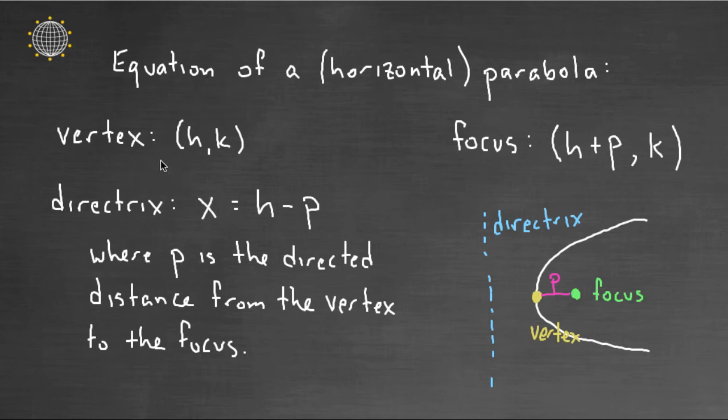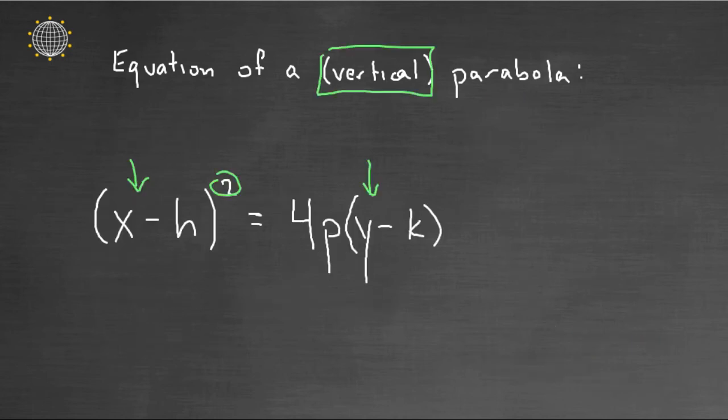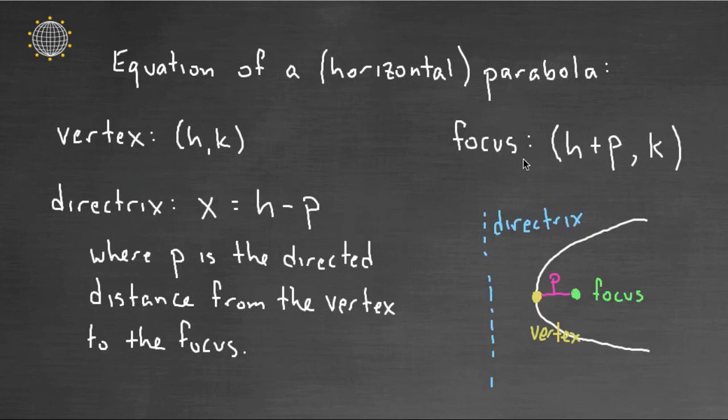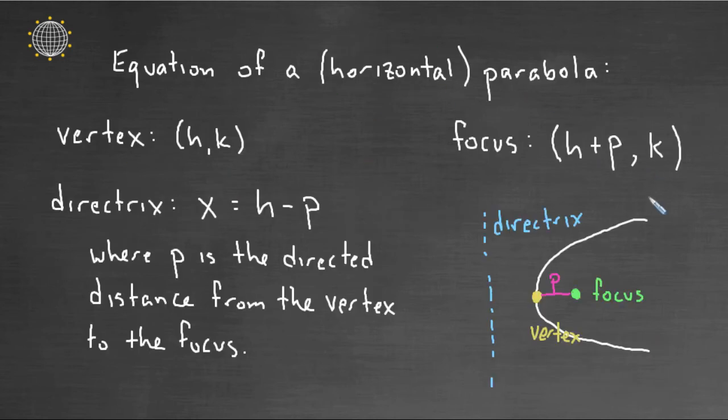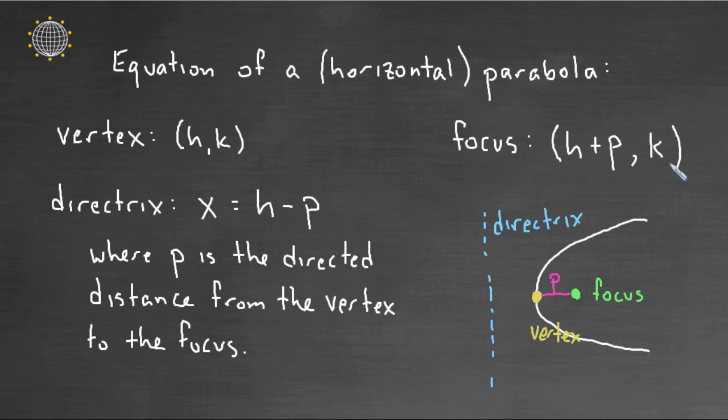So in this case, the vertex is the same thing, (H, K). But notice the directrix. This time, if your parabola opens, let's say, to the right, then your directrix would actually be vertical. It would actually be up or down. So it would be X equals H minus P, as opposed to K minus P. And the focus, rather than shifting the Y value like we did for the vertical parabola, we would shift the X coordinate, so it would be (H plus P, K). And then we'd have this parabola where here's the directrix, here's the focus, and this is the P value. There's the vertex. Okay?